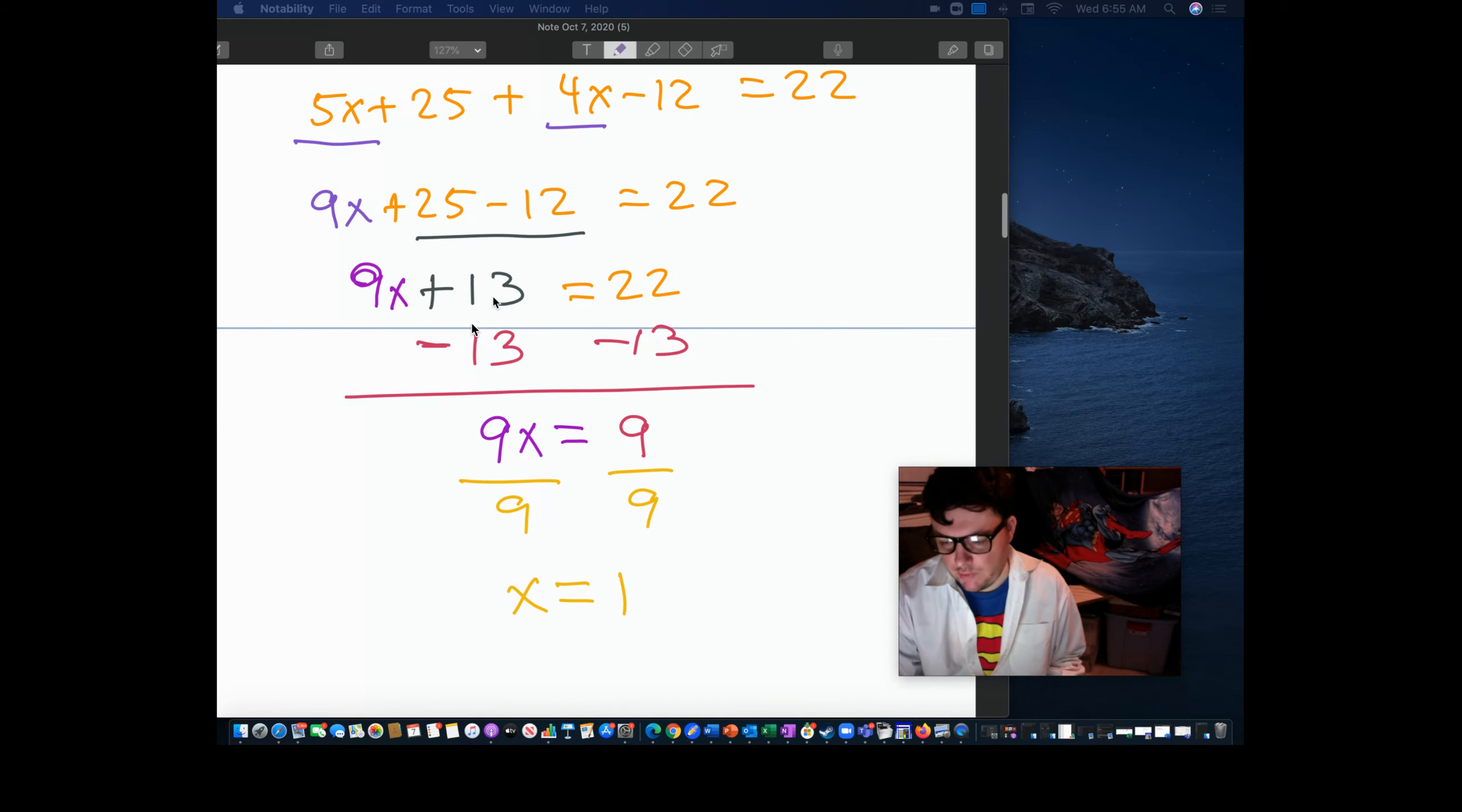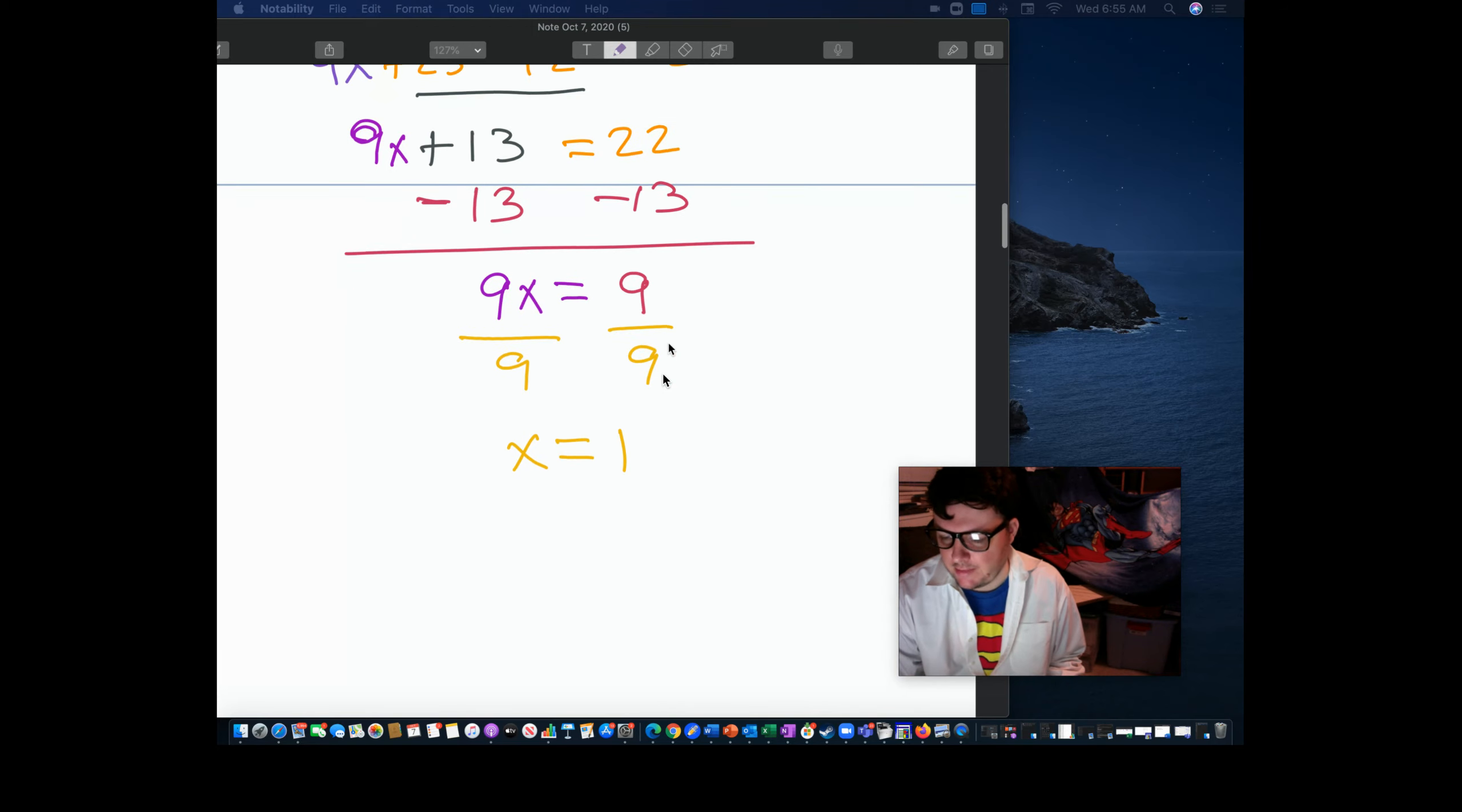And what do I do now? Well, 13 and 22, those are numbers. Those are constants. I want them to hang out together. So I'm going to subtract 13 from both sides so that the numbers can hang out together. And the last bit, want to get x by itself, divide by 9. x is 1.